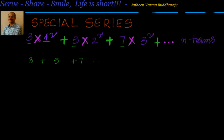The second part is 1² + 2² + 3². Now what we are interested in, for all these problems, is to find out aₙ — the nth term — and how it looks. Once I know the nth term, I can directly substitute into the formulas, apply sigma, and sum it up.